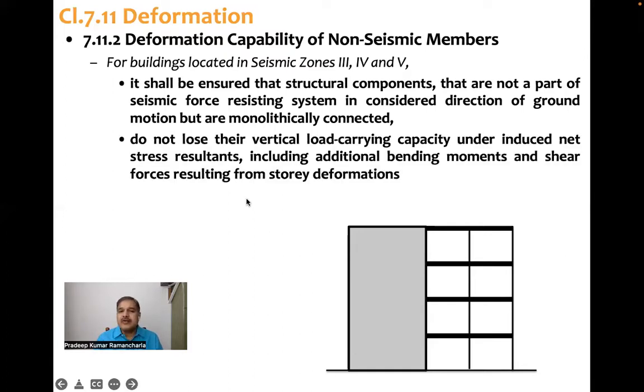So what it says is they do not lose their vertical load carrying capacity under induced net stress resultants, including additional bending moments and shear forces resulting from story deformation. That means gravity frames or non-seismic members should not lose their vertical load carrying capacity. This is what code says.